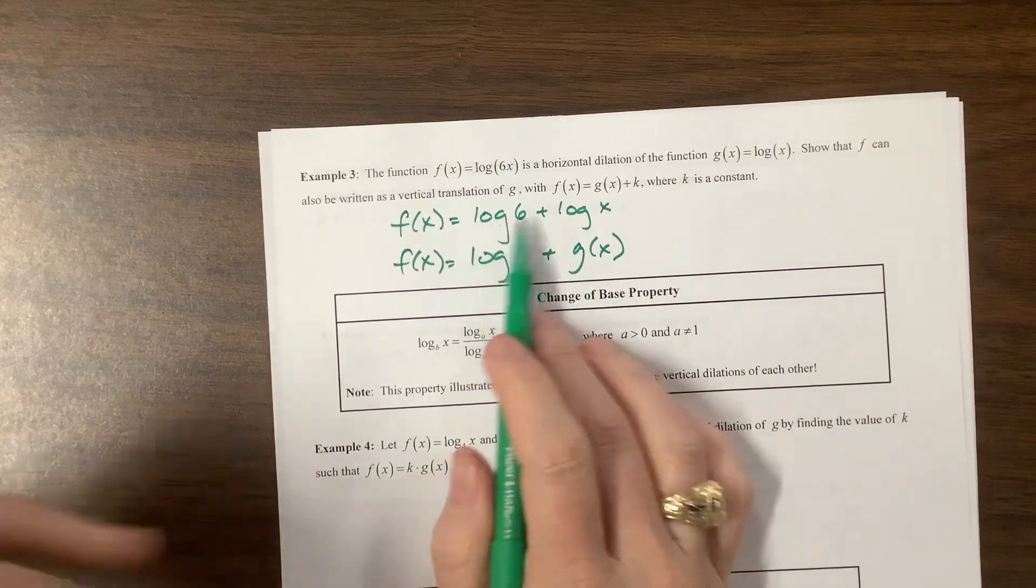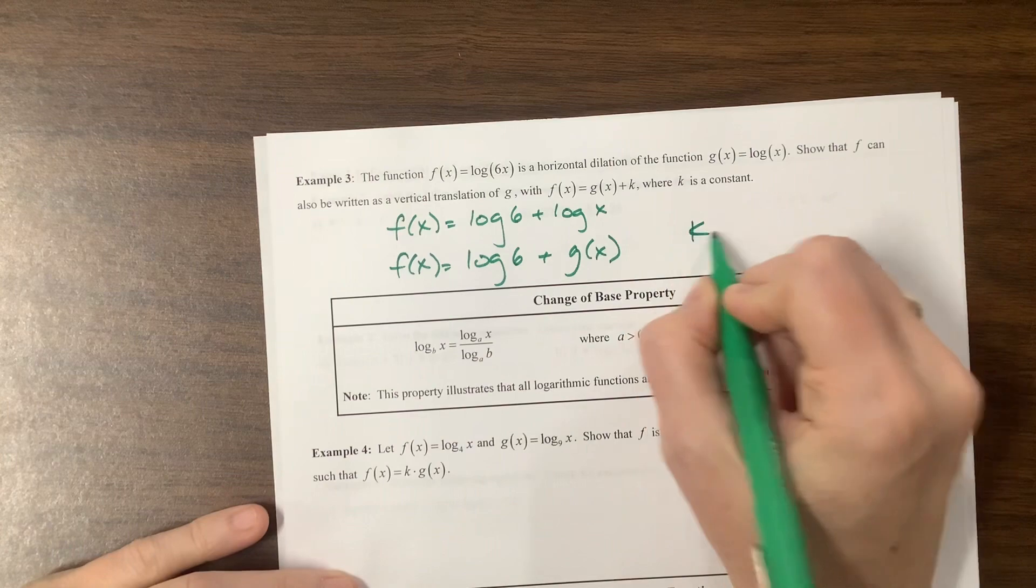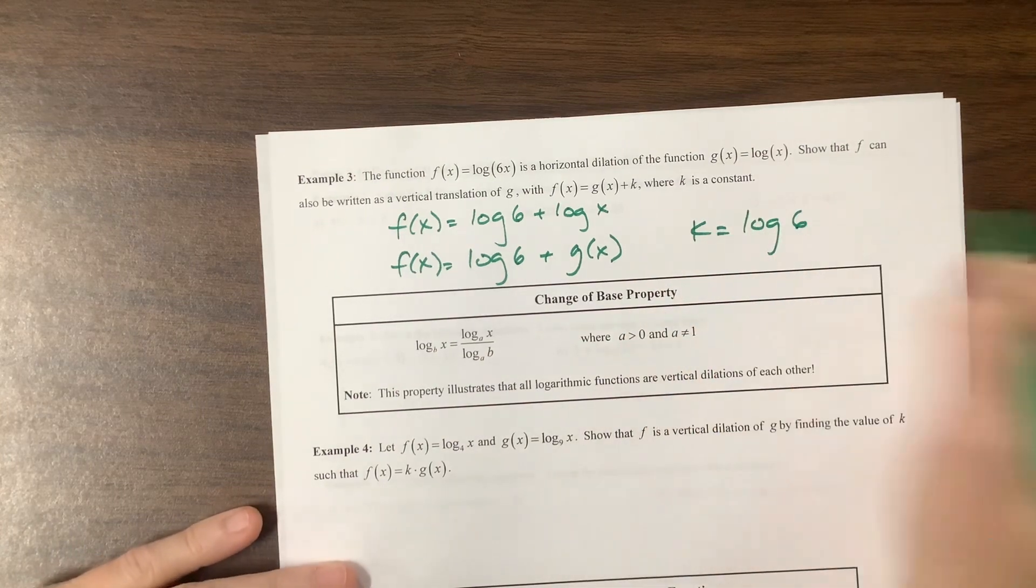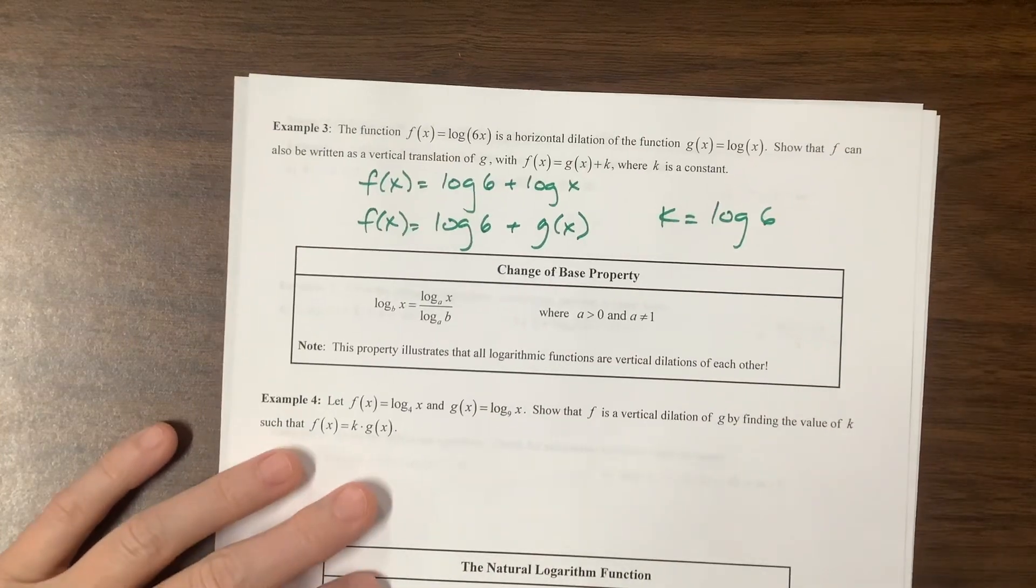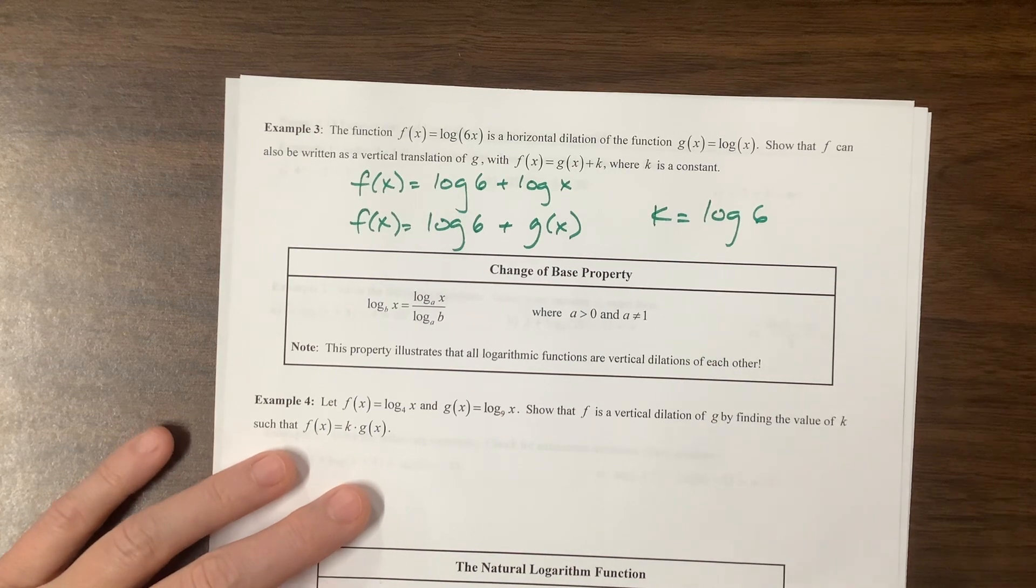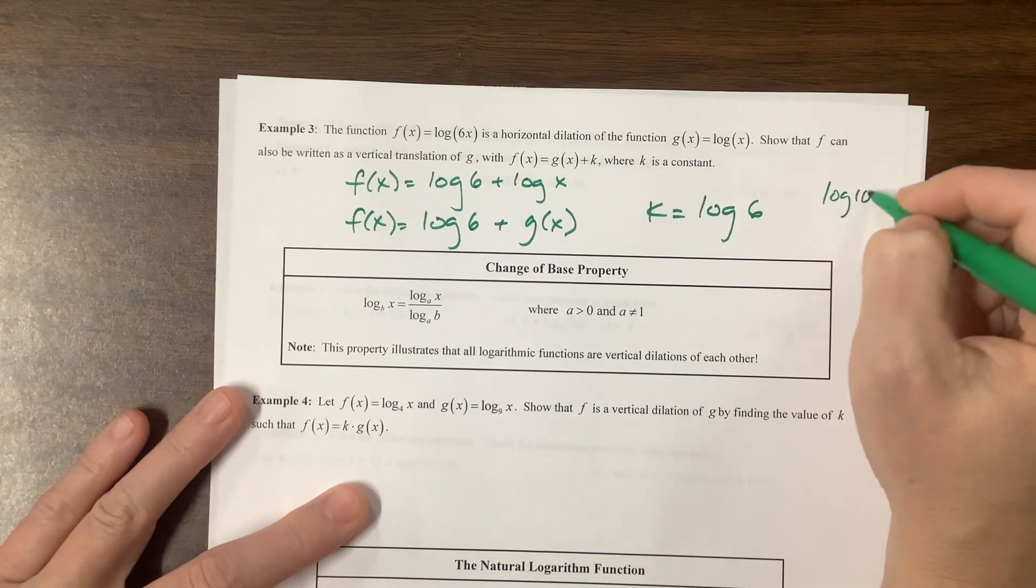That means the vertical translation f of x is equal to, that means this k value is equal to log of 6, which is a constant. I don't know what it is. Somewhere between 0 and 1 because log of 10 is equal to 1.